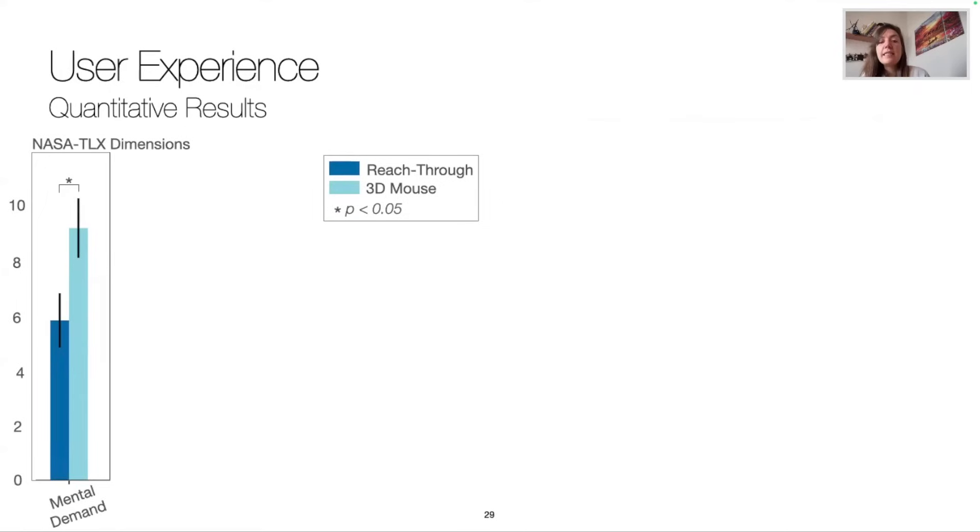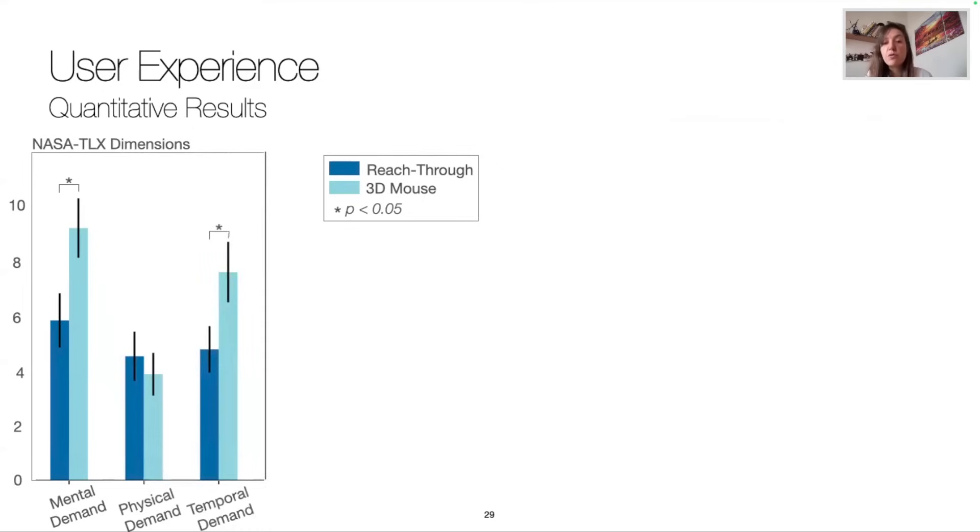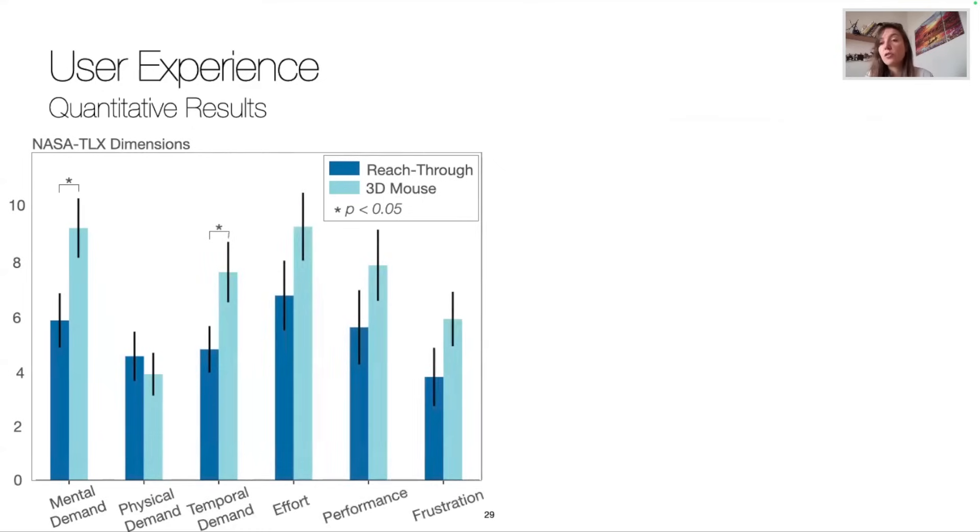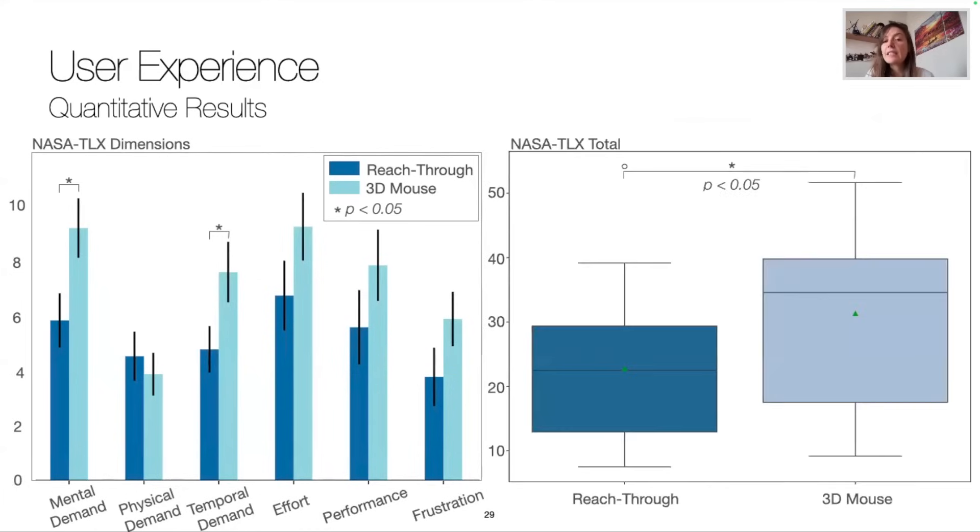Finally, when analyzing the NASA TLX per dimension, the mental workload was significantly higher with the 3D mouse as per the temporal demand. Effort, performance, and frustration were also perceived as worsened with the 3D mouse. More globally, the reach-through modality was significantly less cognitively demanding than the 3D mouse.